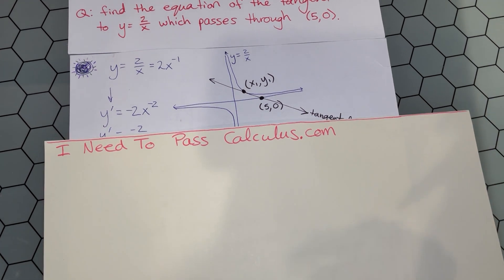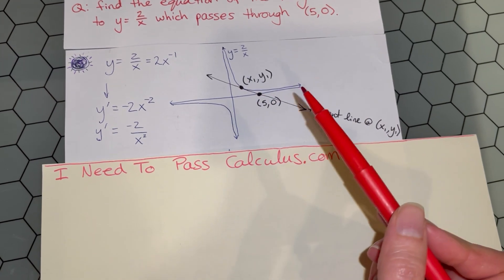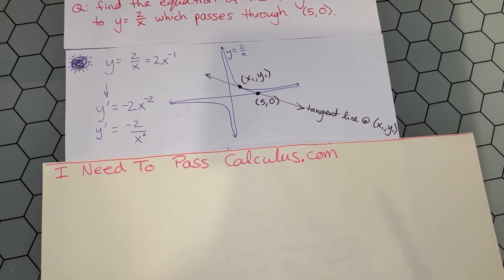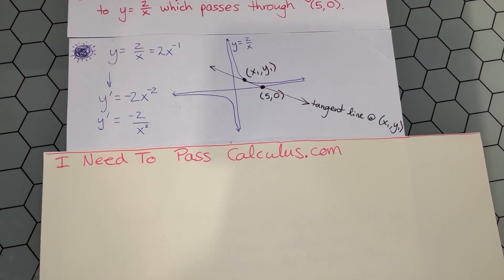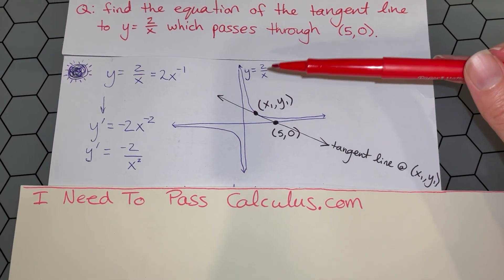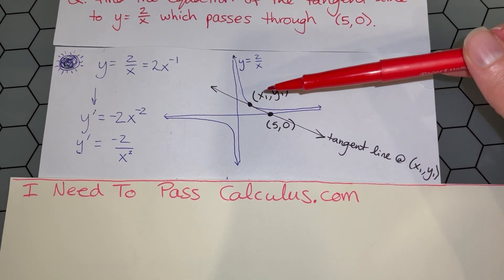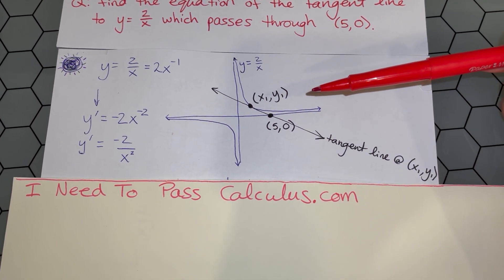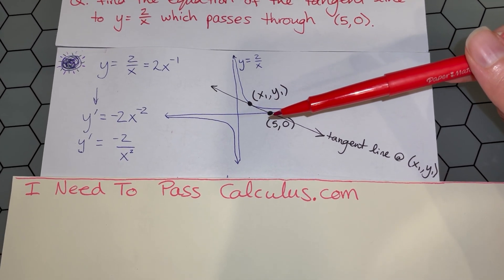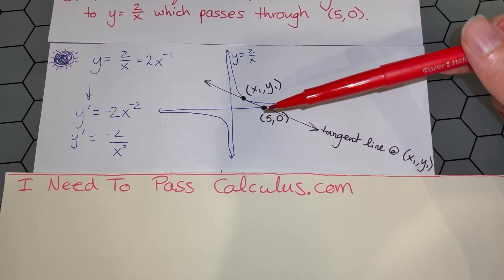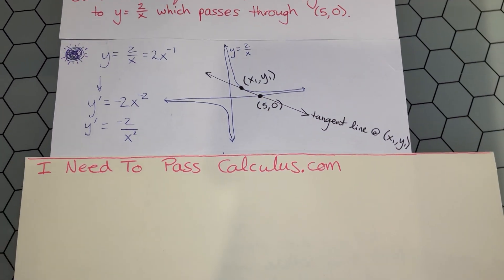Here's a picture of what we're doing. We have the curve 2/x. It's great to know common graphs in calculus, and 1/x is very common. The graph of 2/x looks essentially the same. We have some unknown point (x₁, y₁) where we're building our tangent line, and all we know is that it passes through the point (5, 0) on the x-axis.